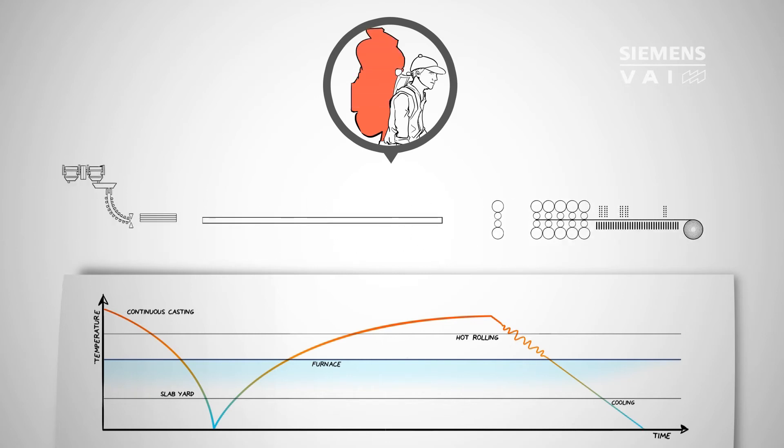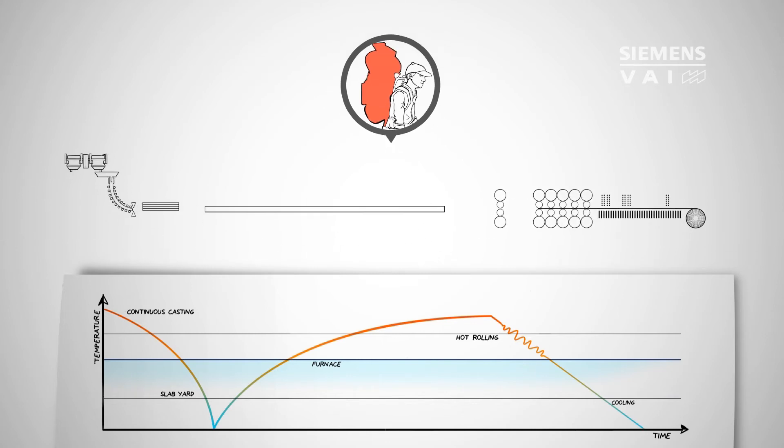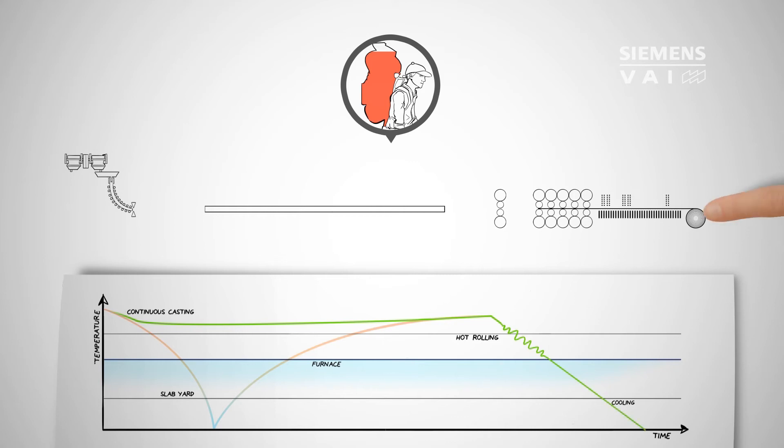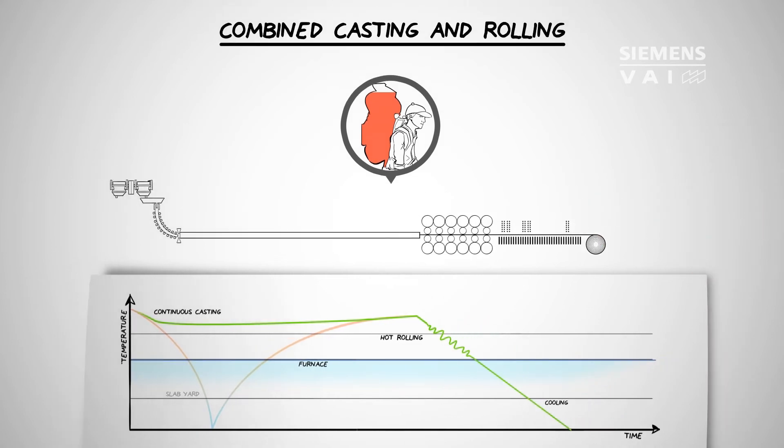Over the years, a number of combined casting and rolling plants have been built, but the traditional principle remained the same. For while it's true that the slabs do not cool down to room temperature, they are still rolled slab by slab in a so-called batch process, during which the temperature is subject to certain fluctuations that can only be compensated for by over-alloying.